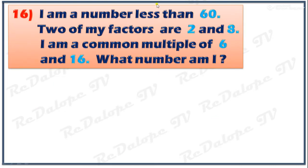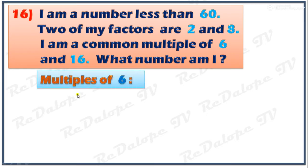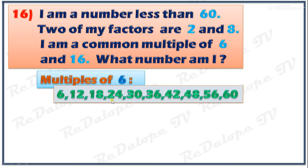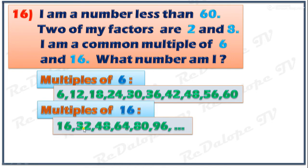I am a number less than 60. Two of my factors are 2 and 8. I am a common multiple of 6 and 16. What number am I? Listing down the multiples of 6 and 16: multiples of 6 are 6, 12, 18, and so on; multiples of 16 are 16, 32, 48, and so on.